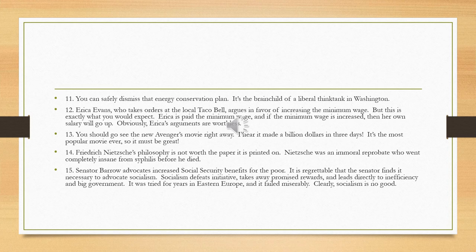Number 15: Senator Barrow advocates increased social security benefits for the poor. It is regrettable that the senator finds it necessary to advocate socialism — and then it goes on to attack socialism. Hopefully you can see this is the straw man fallacy. Senator Barrow makes a point about social security benefits for the poor, and then the person attacks that view by saying he's advocating socialism — that's an extreme distortion. They go on to attack that distortion, but it doesn't touch the original position at all. Number 15 is a clear example of a straw man fallacy.